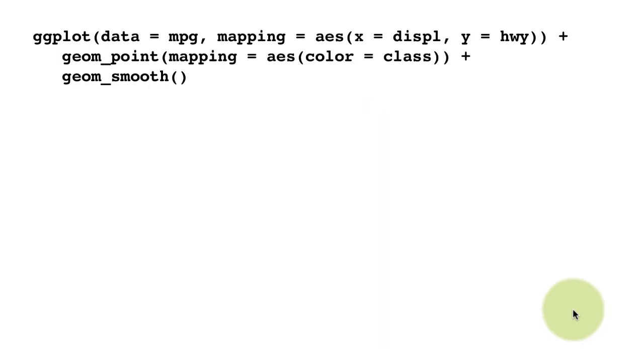So notice this code here. We've made the global settings. This is like the previous slide. So we have set the data as this, the mapping as this, both we've done within ggplot, but let's say that we want the points to be colored depending upon the class of the vehicle, but we don't want any such thing for the smooth layer. Then we can add that AESTHETIC alone to geom_point. So notice that, again, there is a mapping and we've got the AESTHETIC, but we've only mapped the color AESTHETIC.